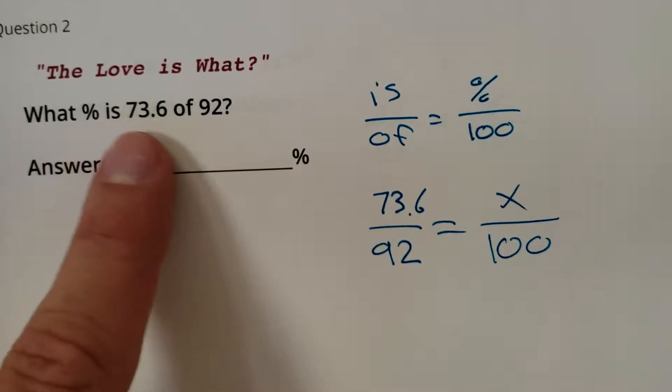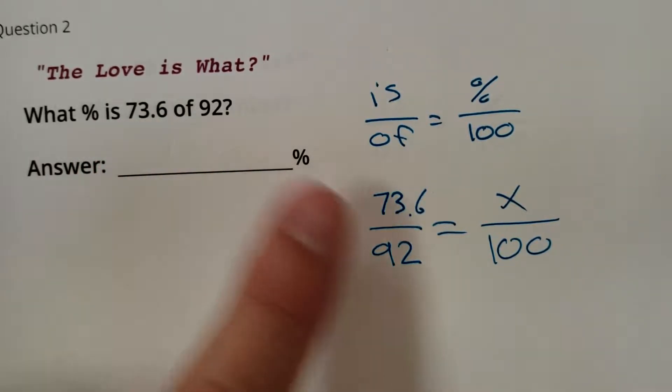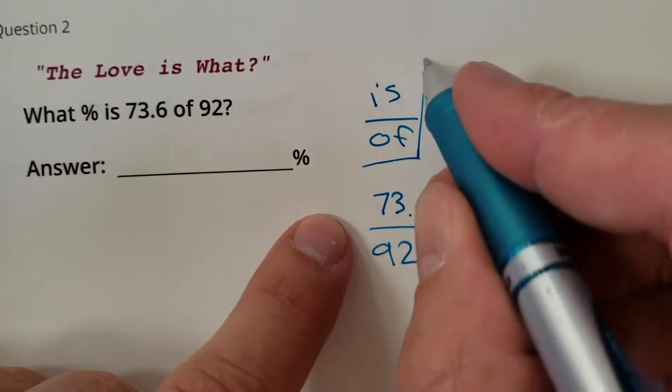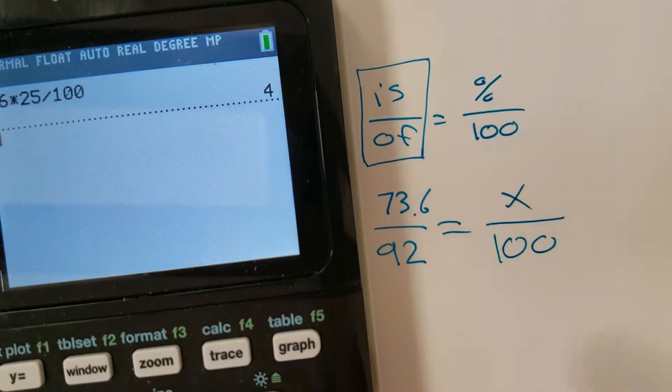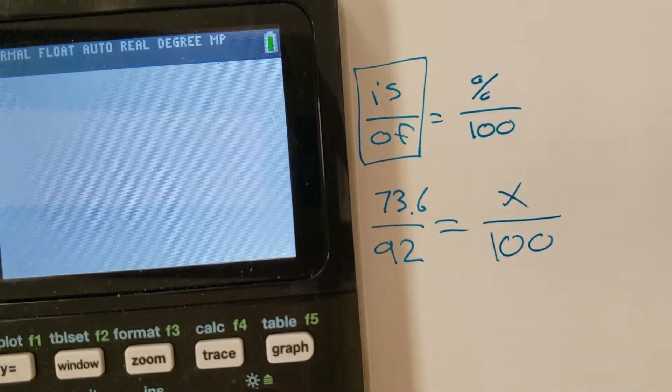Now also one thing you can do really quick: if you have the is and the of, you can just do the is over the of. That's the decimal, we put it over 100 to convert it to a percent. But if you know how to convert decimals to percents, then that's gonna be pretty easy for you.